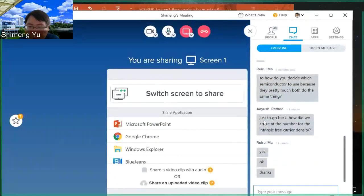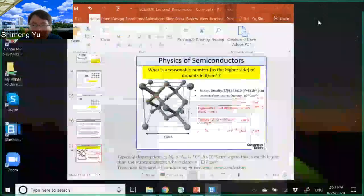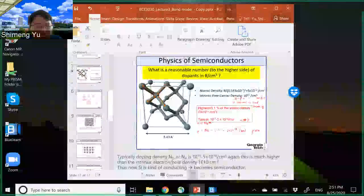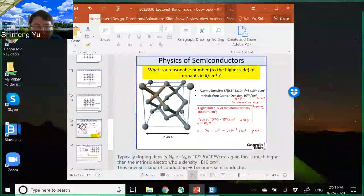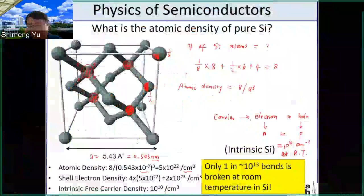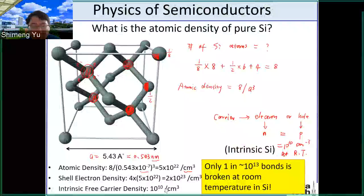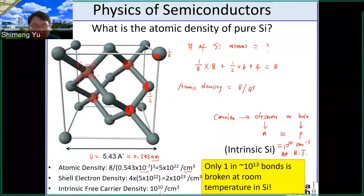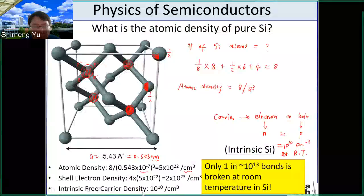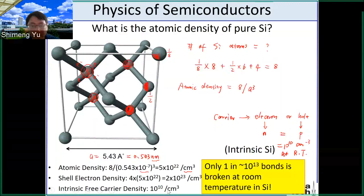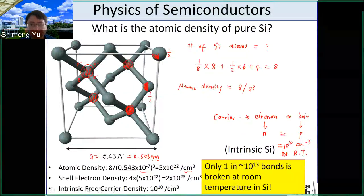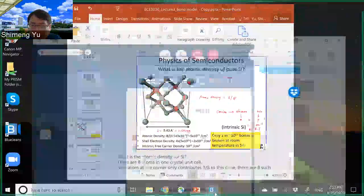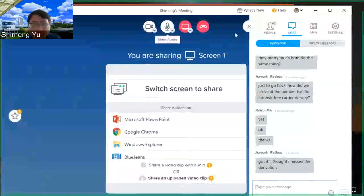Question: how did we arrive at the number for the intrinsic free carrier density? We did not derive it in this lecture — the derivation is very complicated. This number is a function of temperature; at room temperature it is 10 to the power 10 per centimeter cubed, and at higher temperatures it increases. You can find the derivation in the reference book, but this course does not require you to derive it.